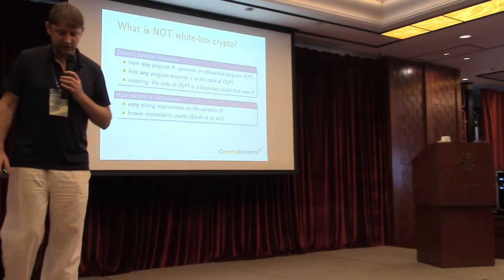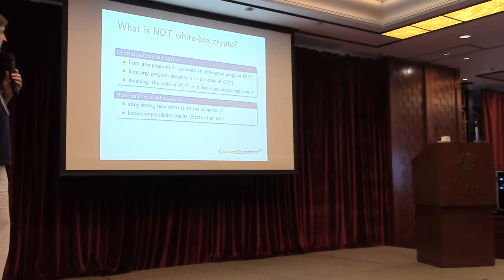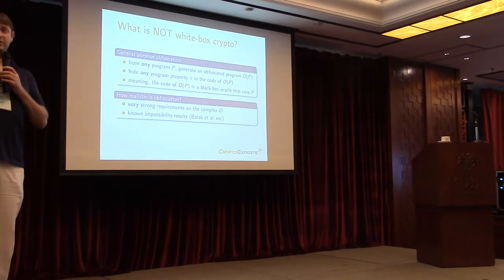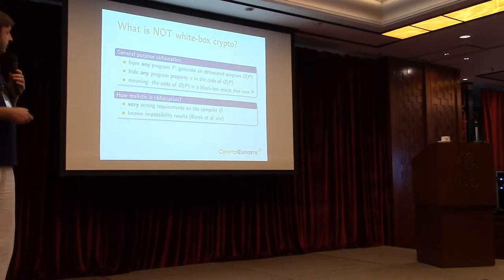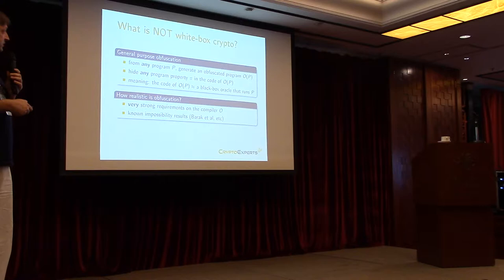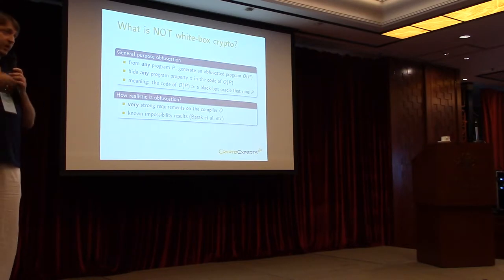Usually there is some confusion between what whitebox crypto is as opposed to what obfuscation is. If you think about general-purpose obfuscation, it's something that is way stronger than whitebox crypto. For obfuscation, we're talking about a transformation that takes as input any program and outputs another obfuscated one. What we want to hide is basically everything about the program — any property that the program may fulfill.